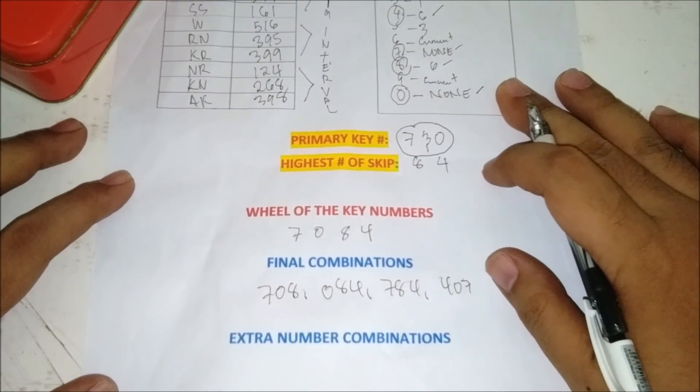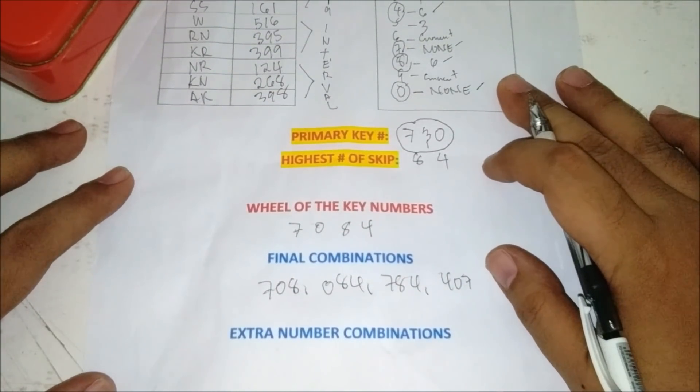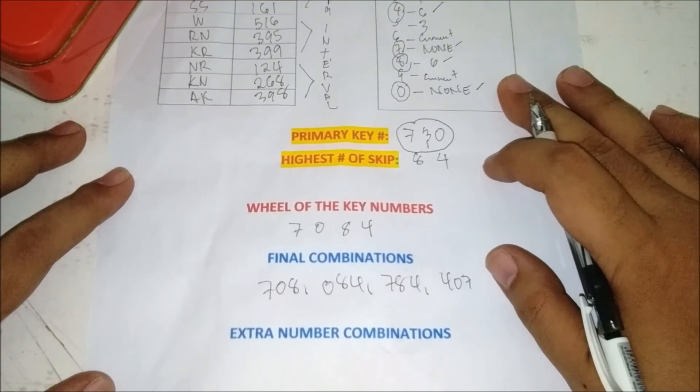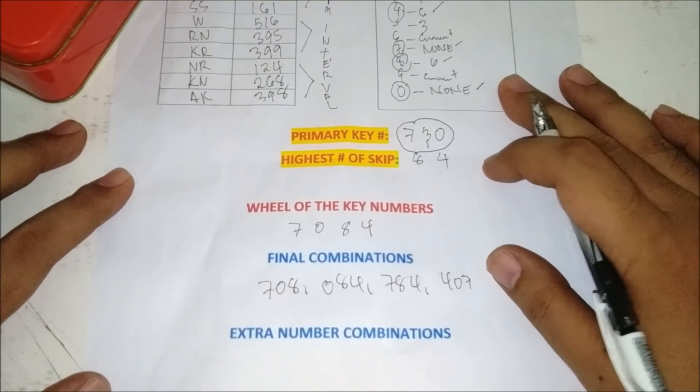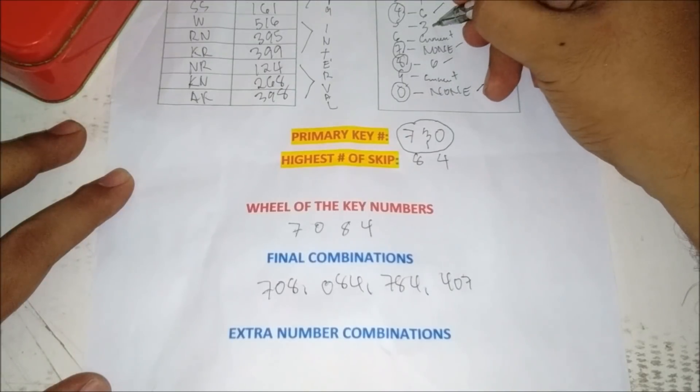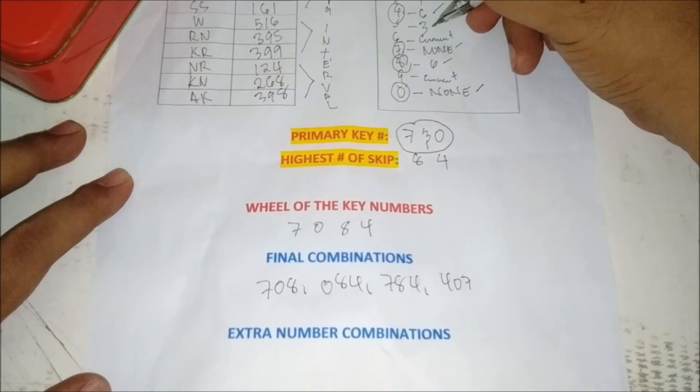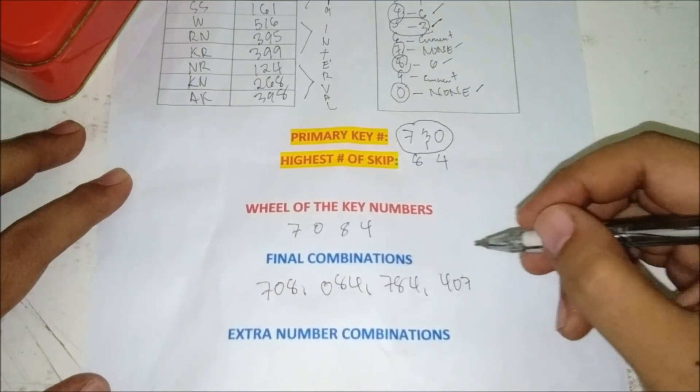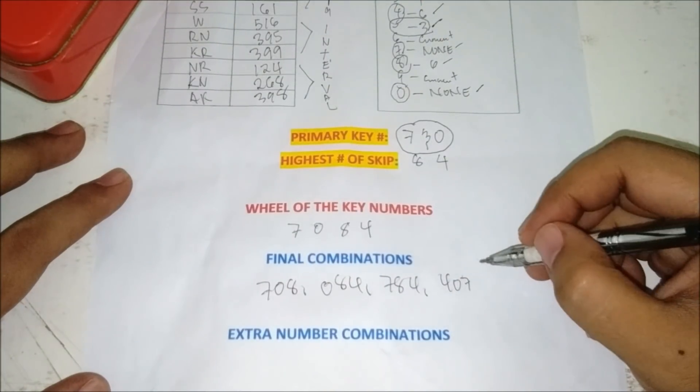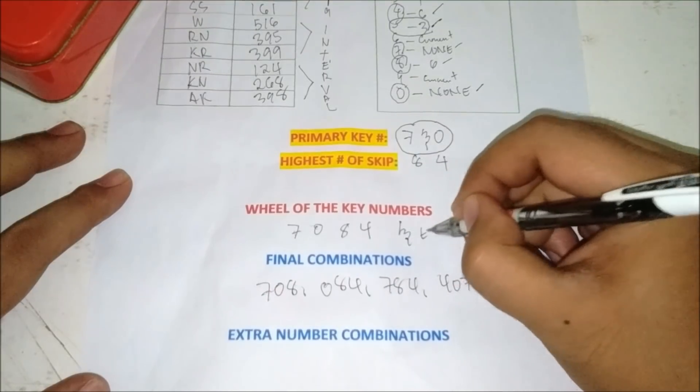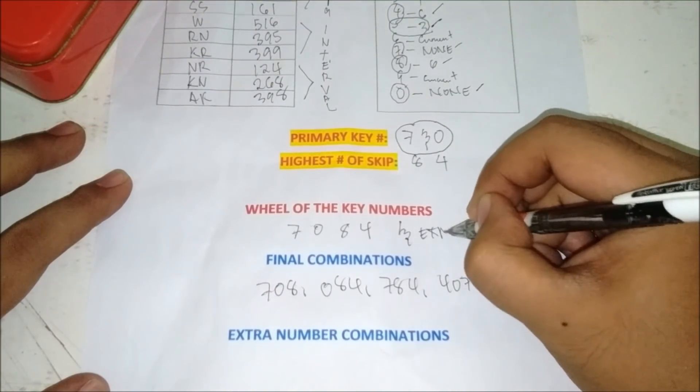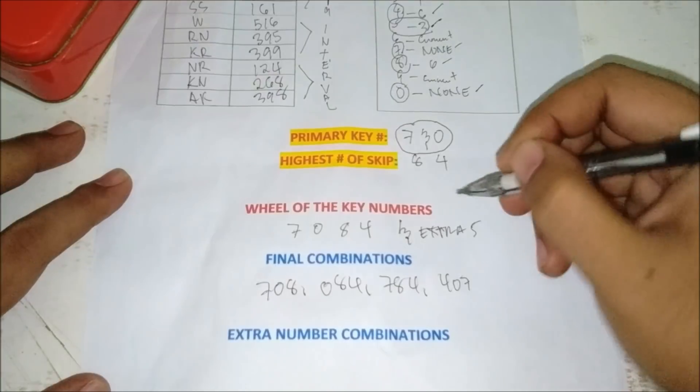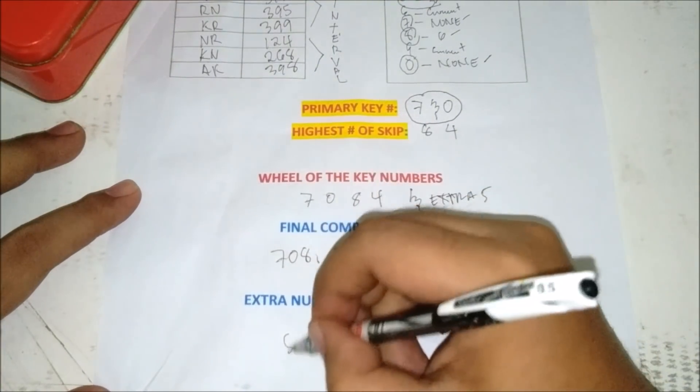Now we will find the extra key number to get our combination. So on this number of skips tally, I choose the number five for the extra number. So these are the combinations.